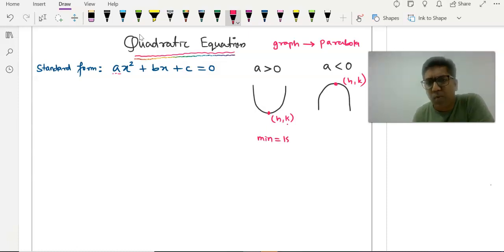Similarly, if the graph opens down, it has a maximum value. The graph cannot go - there is no point above this point. This is the maximum it can reach. So it has a maximum and the maximum is your y coordinate which is k.